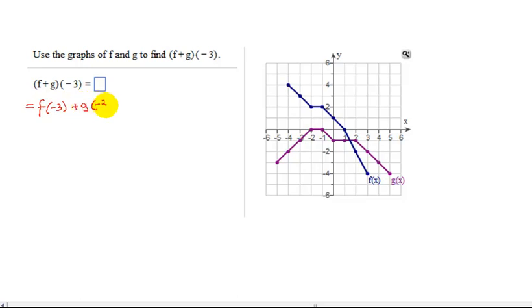So we just need to find this value and this value from the graph and then add the results together. So remember if I say f of negative 3, it means x equals negative 3. Find the value of the function f at x equals negative 3. Notice the blue graph is the graph of f.